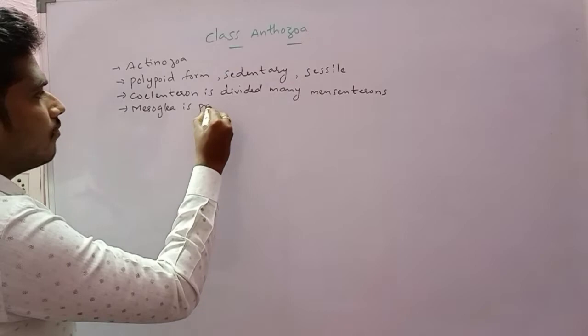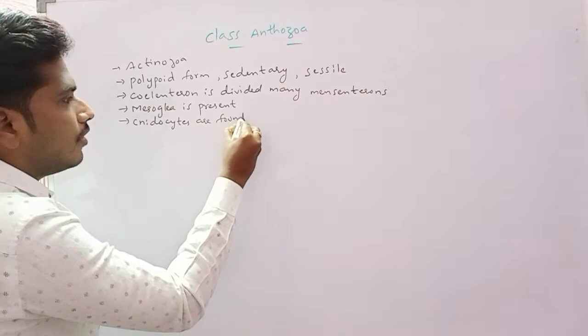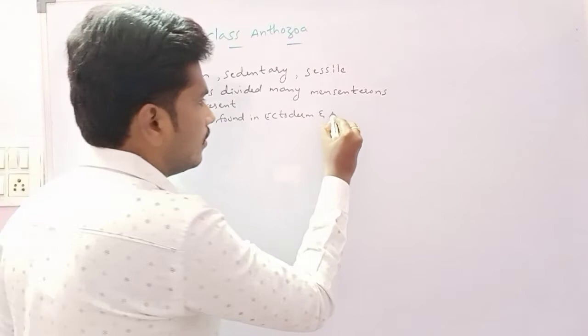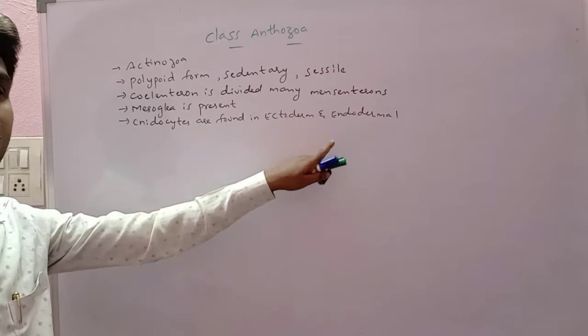And the nematocytes which are there, they are the cells particularly. Nematocytes are formed from or found in ectodermal and endodermal cells. Nematocytes are the cells present in the cnidarians. They are found in ectodermal and endodermal parts. They are formed from the ectodermal and endodermal parts here.